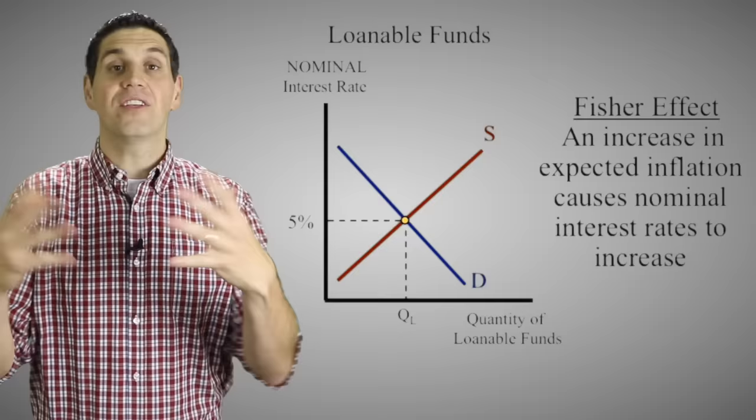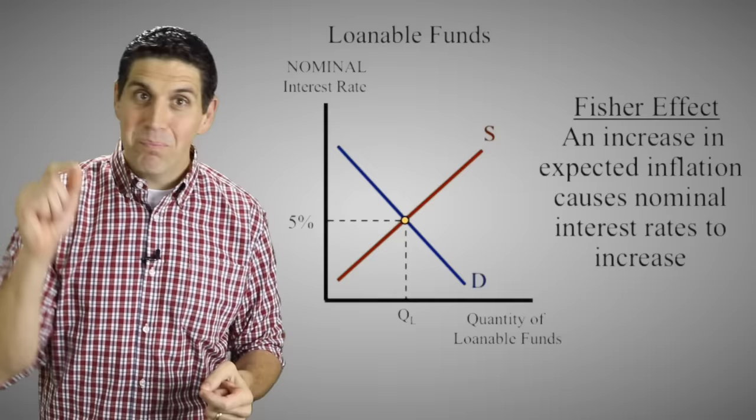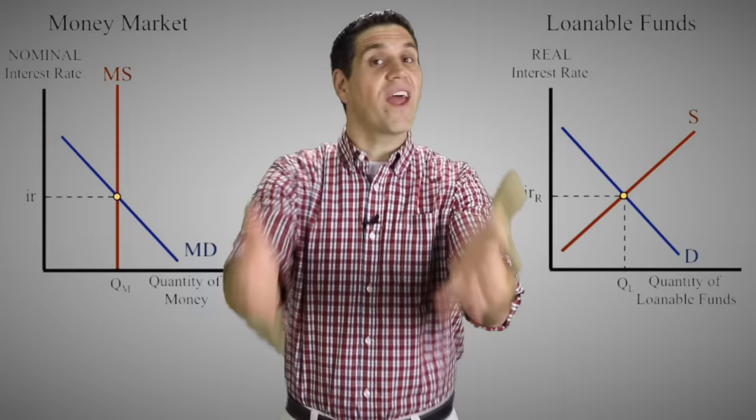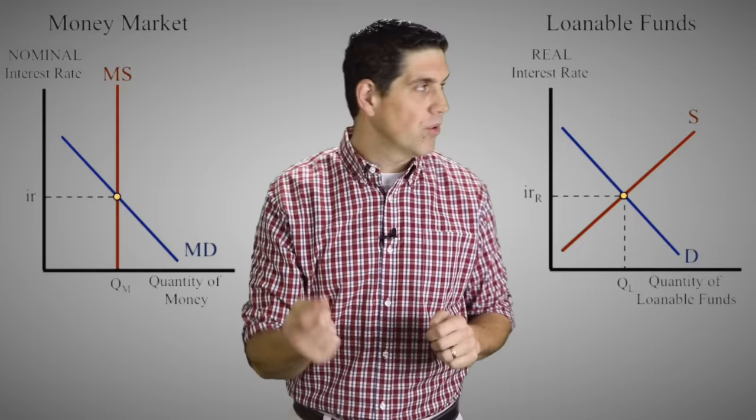This whole concept — of borrowers and lenders adjusting their expectations according to inflation — is called the Fisher effect, and it explains why the loanable funds graph is often labeled real interest rates. It's taking the inflation out of it. A change in inflation doesn't really affect people's willingness to lend or borrow in the long run, so we label that axis real. Now you know why there are two different graphs, and why one is labeled nominal and the other real.